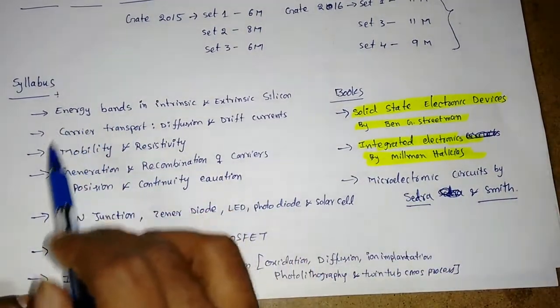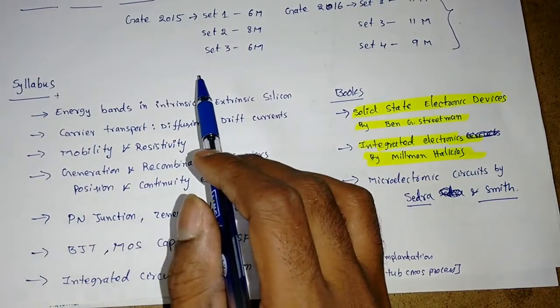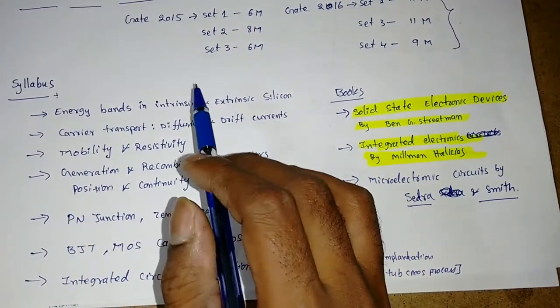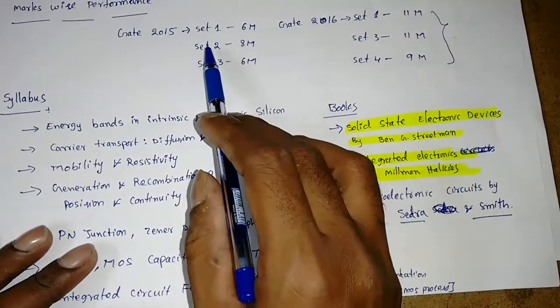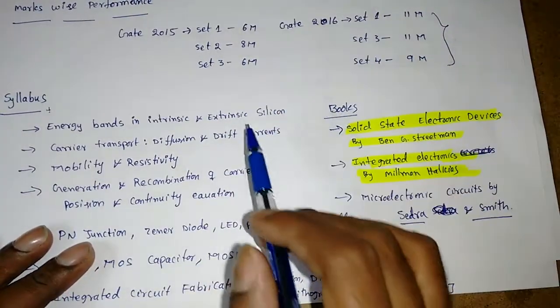It depends on the concepts—how much we learn. If you learn the EDC course very well, you may get some marks in analog electronics also. There is not much variation; on average, we get 8 to 10 marks in EDC course.